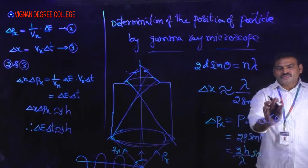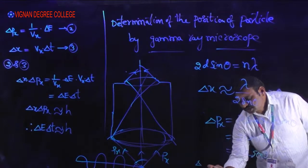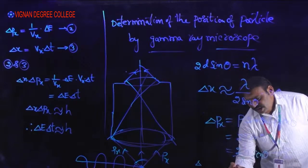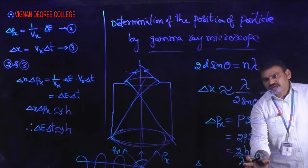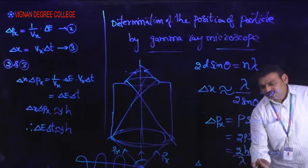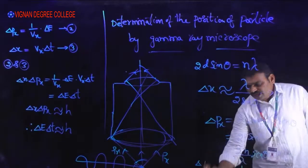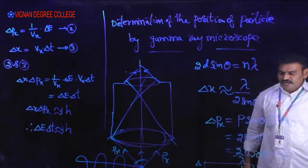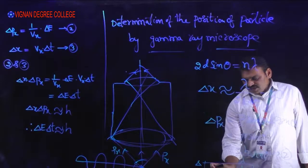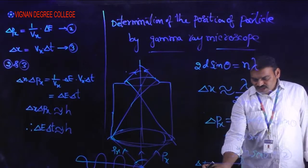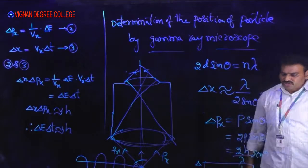Using equations 1 and 2: Δx · Δpx = (λ / 2 sin θ) · (2h sin θ / λ). The λ terms cancel and the 2 sin θ terms cancel, leaving h. Therefore Δx · Δpx ≡ h. This confirms Heisenberg's Uncertainty Principle: the product of uncertainty in position and momentum is identically equal to Planck's constant h.